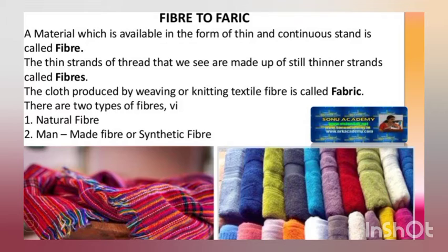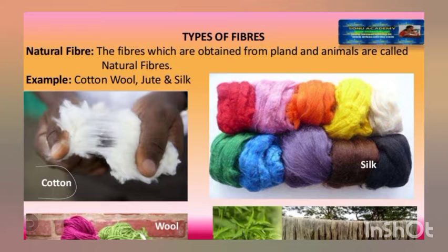There are two types of fibers: natural fiber and man-made fiber. Natural fibers are those obtained from plants and animals. Examples include cotton, silk, jute, and wool.